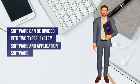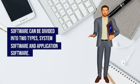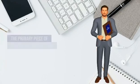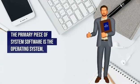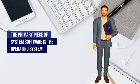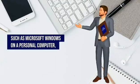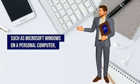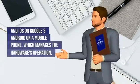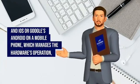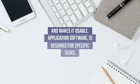Software can be divided into two types: system software and application software. The primary piece of system software is the operating system, such as Microsoft Windows on a personal computer, and iOS or Google's Android on a mobile phone, which manages the hardware's operation and makes it usable.